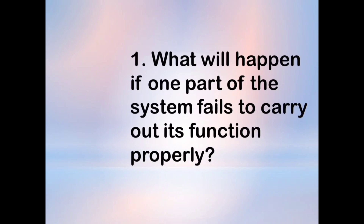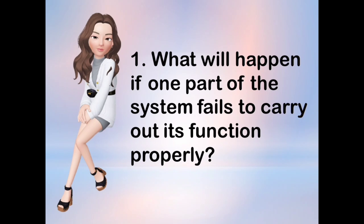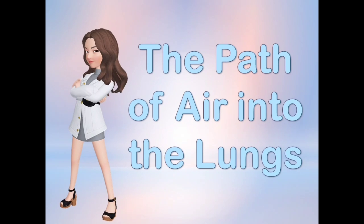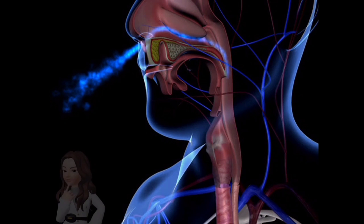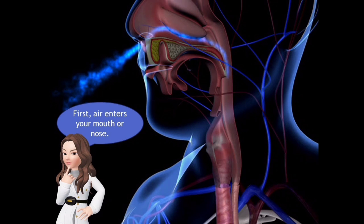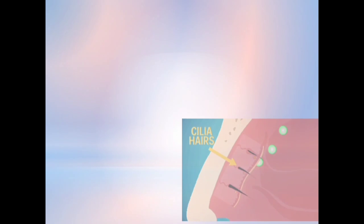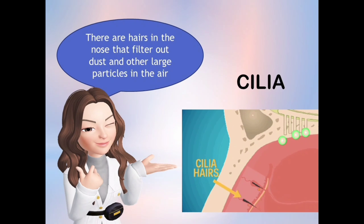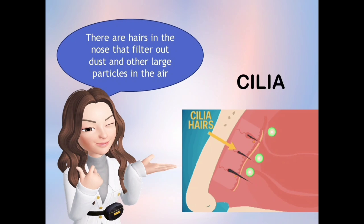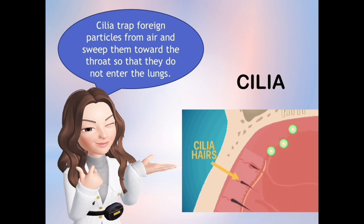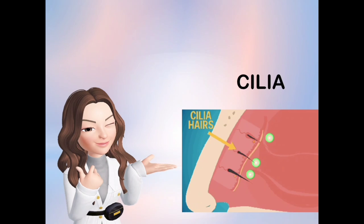Now, what do you think will happen if one part of the system fails to carry out its function properly? Now, let us discuss the path of air into the lungs. First, air enters your mouth and your nose. Inside our nose, we have cilia. These are hairs in the nose that filter out dust and other large particles in the air. Cilia trap foreign particles from air and sweep them toward the throat so that they do not enter the lungs.